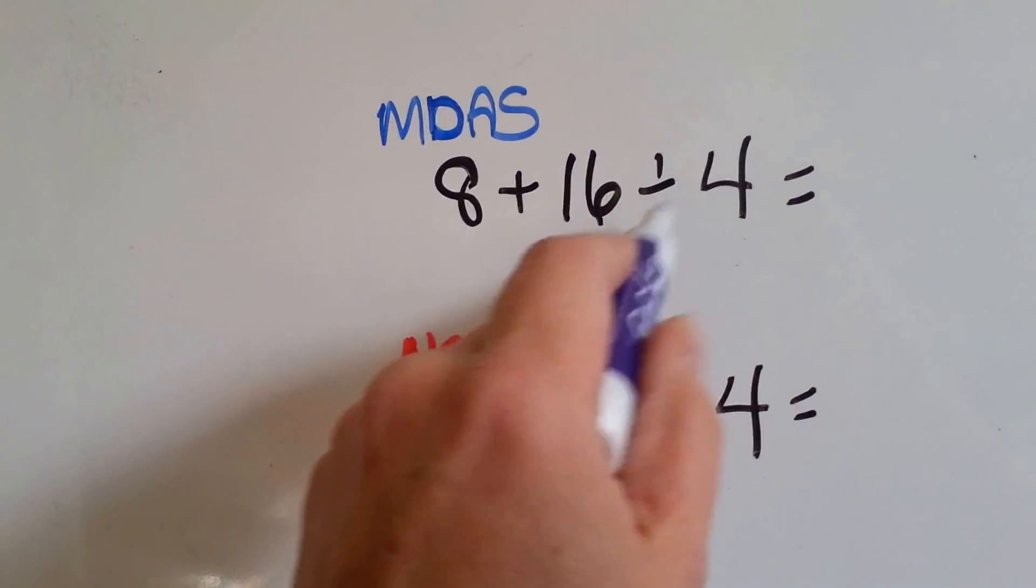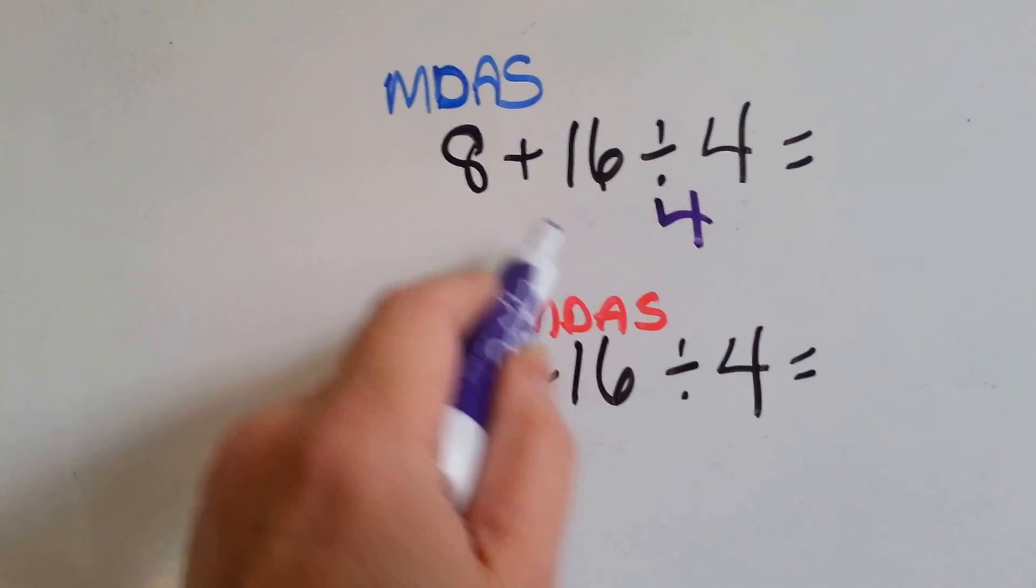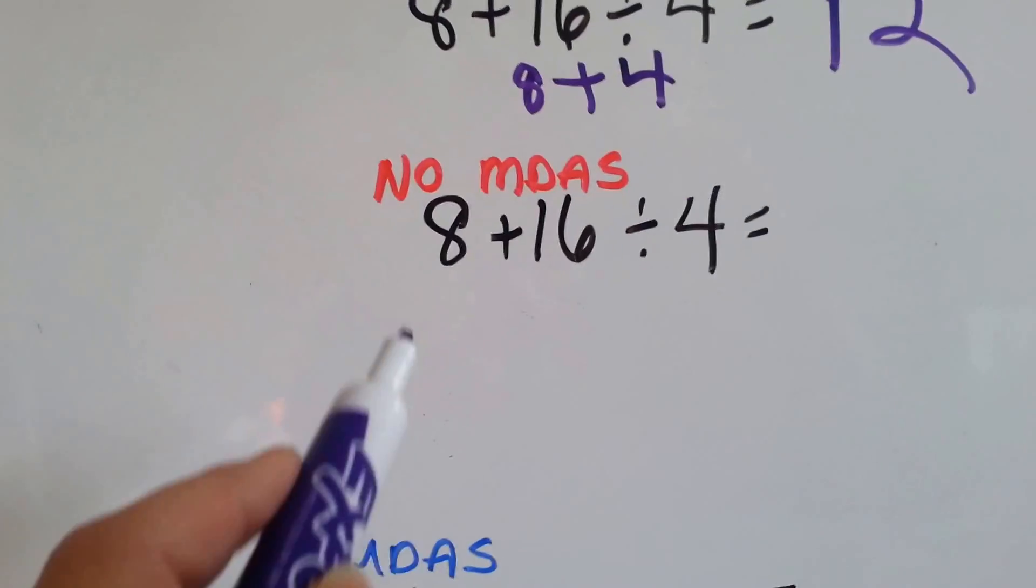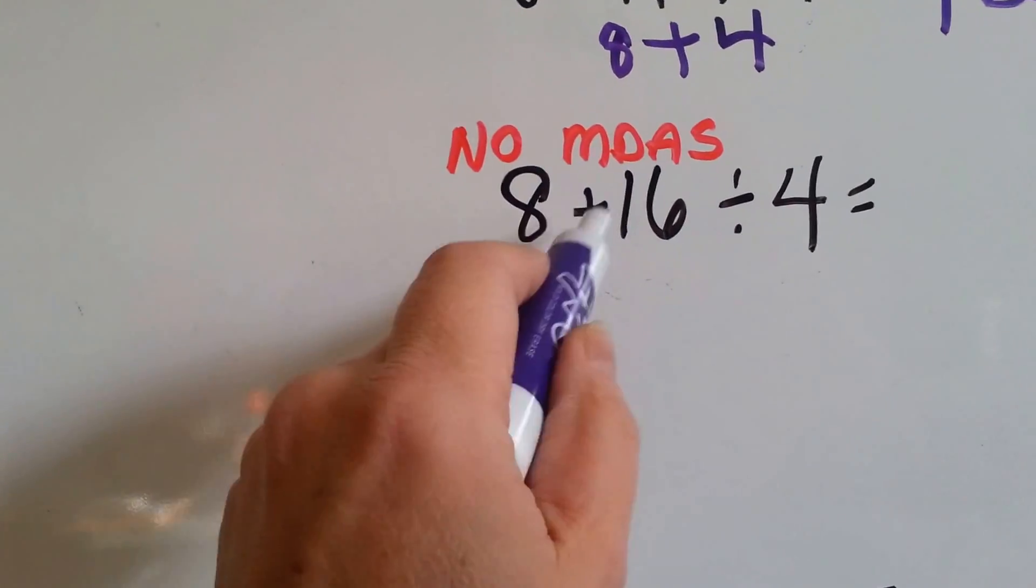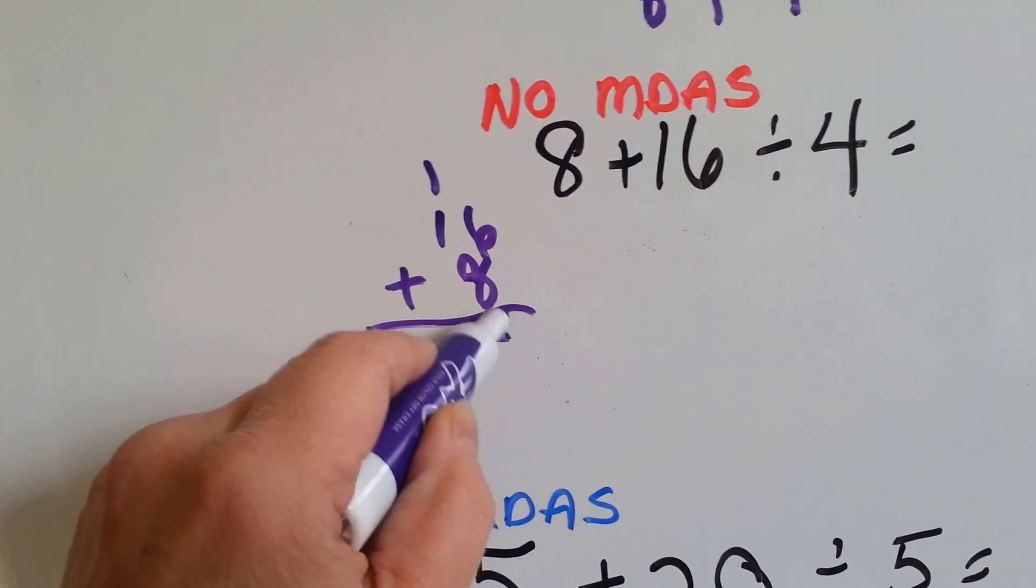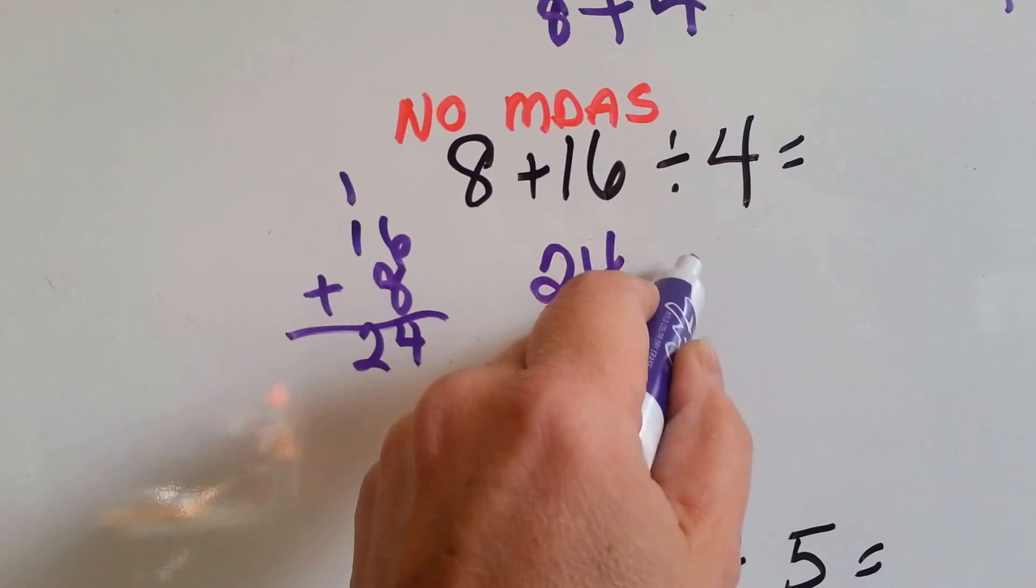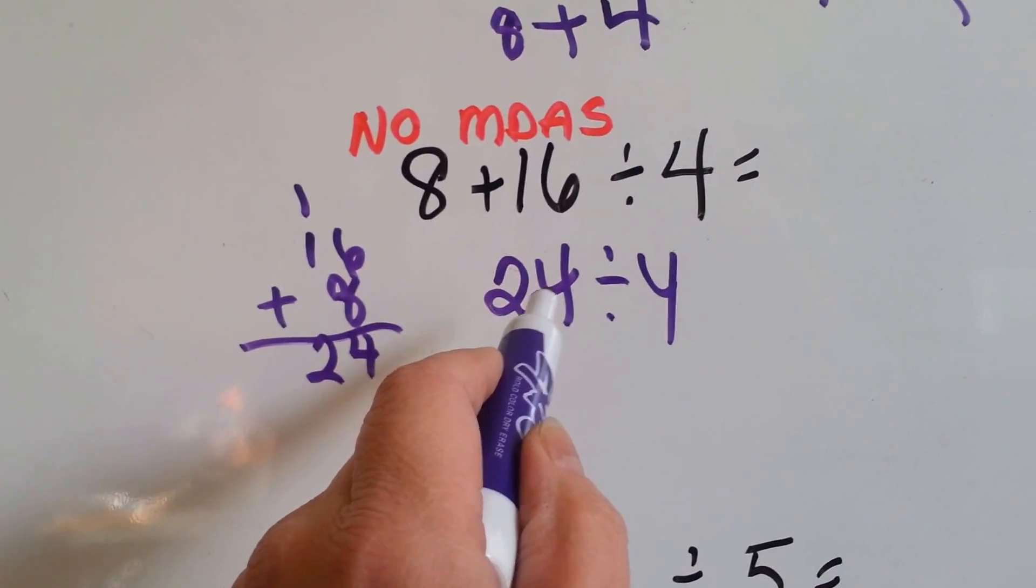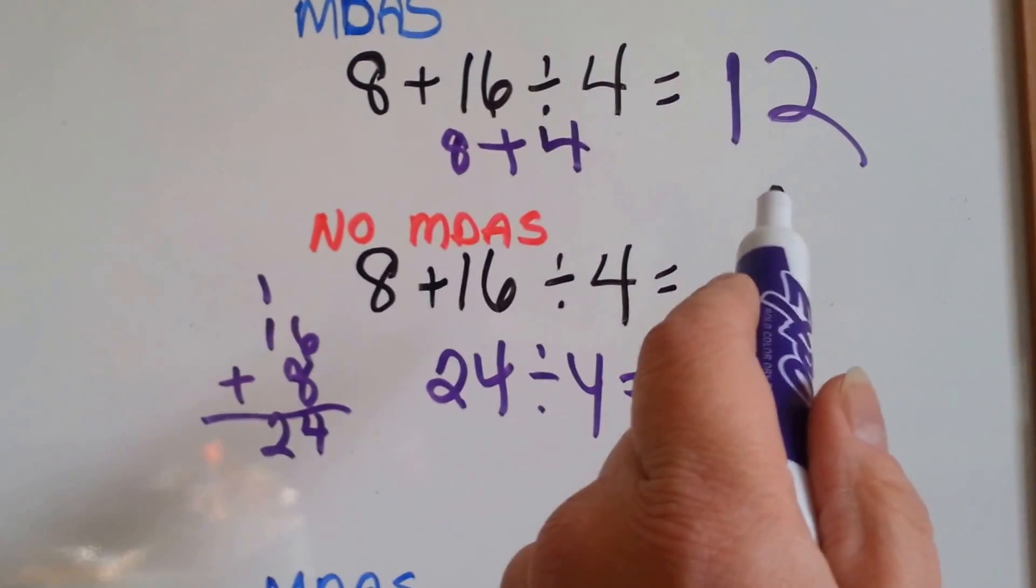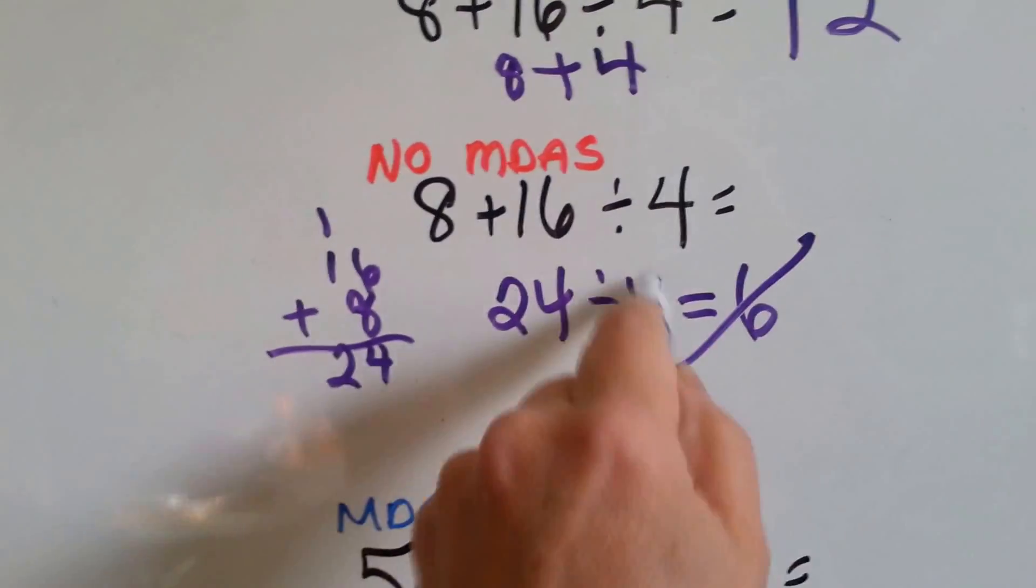Division. 16 divided by 4, how many 4s are in 16? 4 times 4 is 16. Now, we're going to add the 8. 8 plus 4 is 12. Now, let's do it without order of operations. 8 plus 16. 8 and 6 is 14. Carry the 1, put the 4 down. 1 and 1 is 2. So, now we've got 24 from this, and we're going to divide it by 4. How many 4s fit in 24? 4 times 6 is 24. So, that would be a 6. Well, 12 is the right answer. You would get an A on your test if you did it this way. But if you did it without order of operations, you'd get a 6, and you'd get it marked wrong.